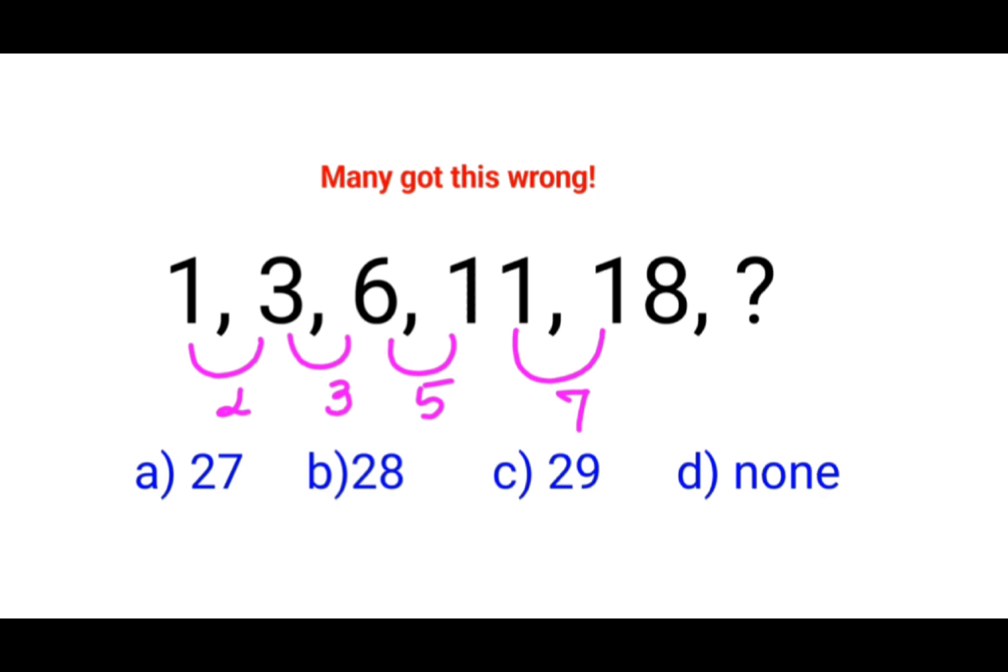Now students, as you can see, 2, 3, 5, 7 - all of them are prime numbers. So what is the number which should be coming next after 7? That is 11.